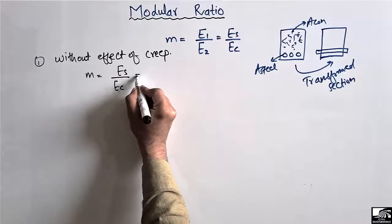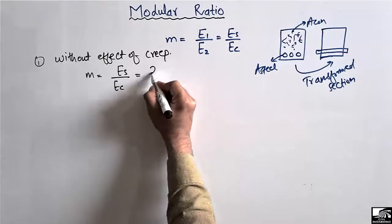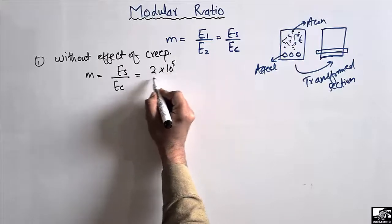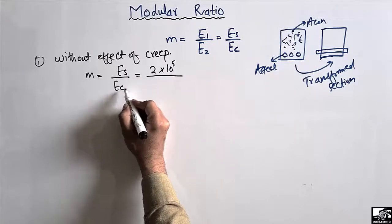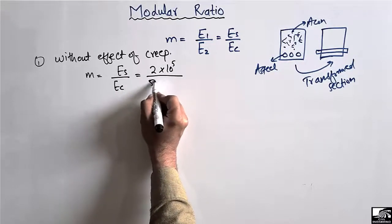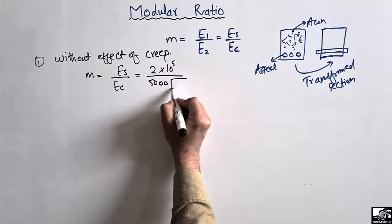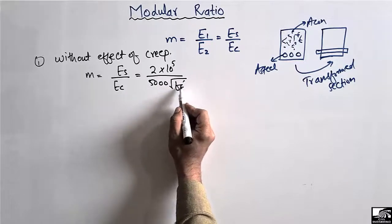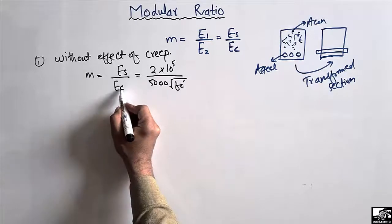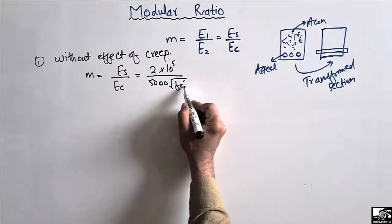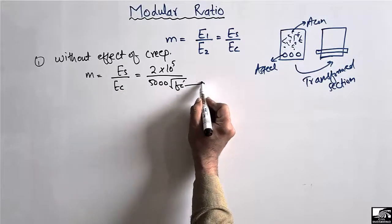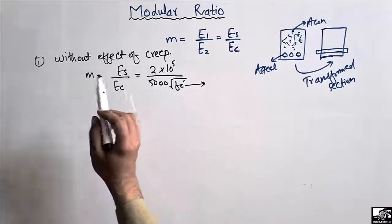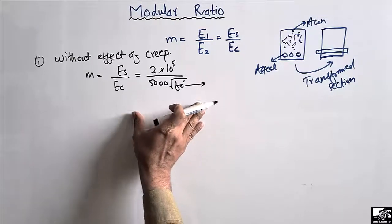For Formula 1, the modular ratio equals the elasticity of steel divided by the elasticity of concrete. The elasticity of steel is 2×10⁵ MPa, divided by the elasticity of concrete which is 5000√fc', where fc' is the compressive strength of concrete. This formula is used for short-term effects only.